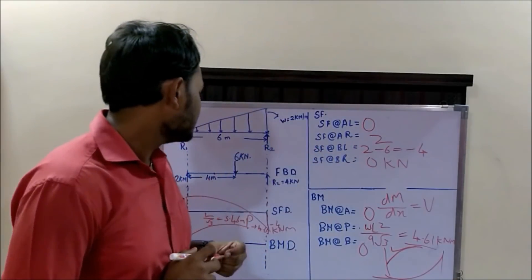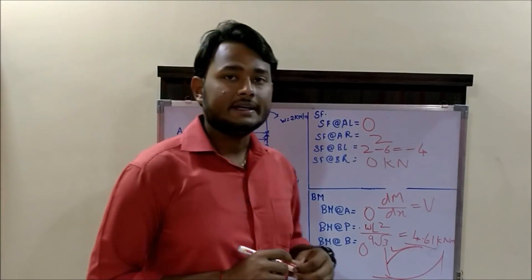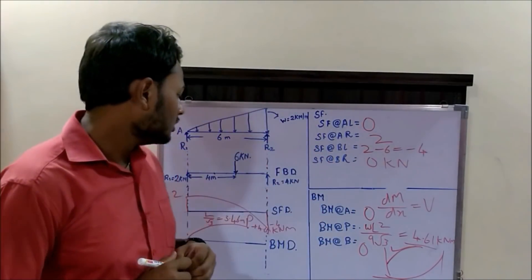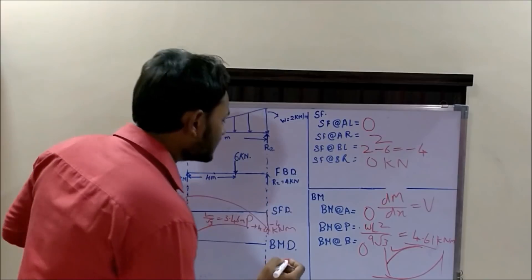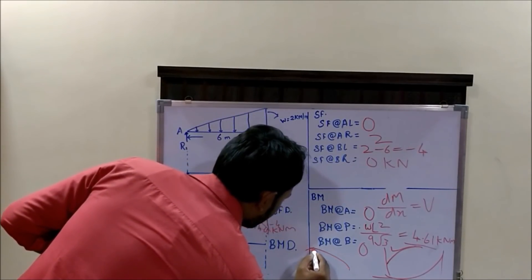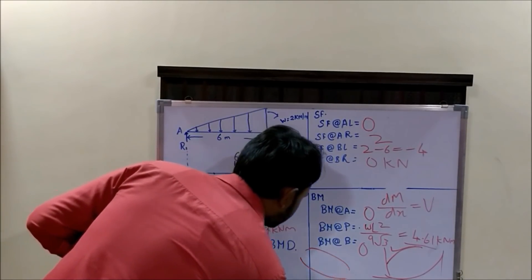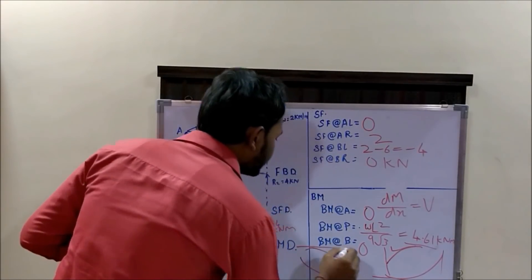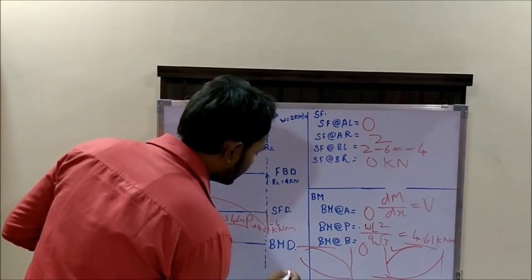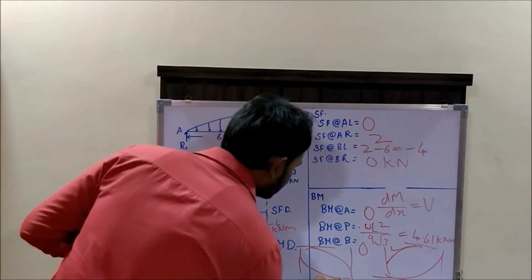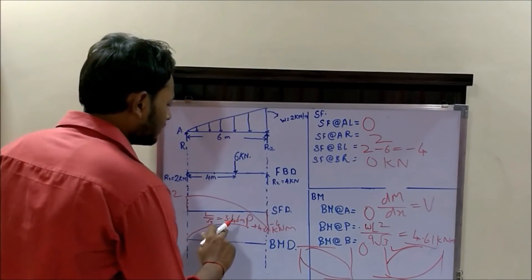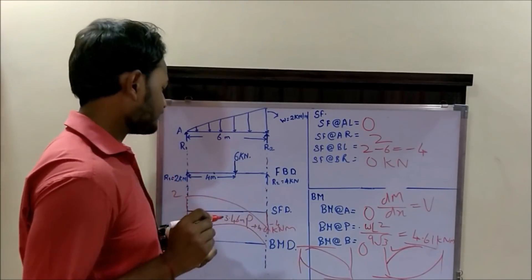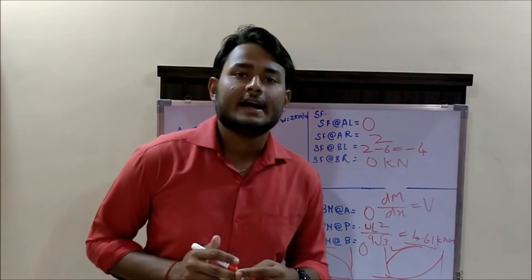In the second case, the shear force increases from 0 to 4 kN, so we need a curve whose slope increases. There are two possibilities: in the first, slope increases from 0° to 90°; in the second, slope decreases from 90° to 0°. Since the shear force increases from 0 to 4, the first curve applies. Hence, our bending moment diagram is completed.